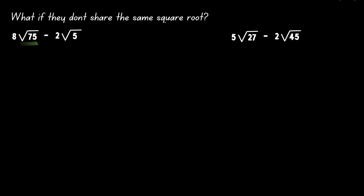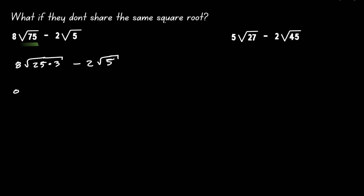Let's start with the square root of 75. Can we simplify the square root of 75? Notice that 75, we can write it out as 25 times 3. By the rule of roots, if we are multiplying inside the square root, we can multiply by the square root of each number individually. So now we can rewrite this as 8 times the square root of 25, times the square root of 3.